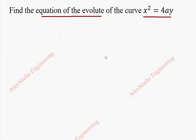First we have to write the parametric form. The parametric form for this equation is x is equal to 2at and y is equal to at squared.